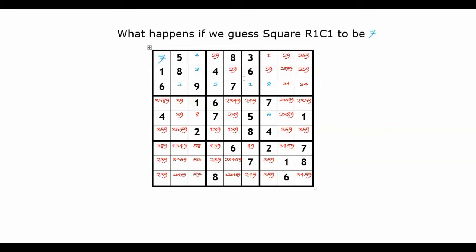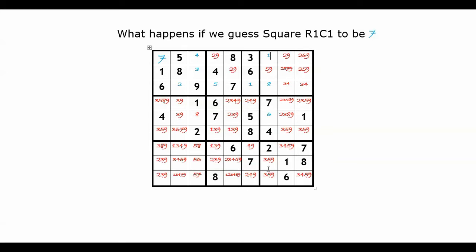Now we have 2 more squares to be finalized. We finalize this one and remove 1 from its row, 1 from its column, and 1 from its box. Then this square can be finalized with 8. We remove 8 from its row, 8 from its column, and 8 from its box.